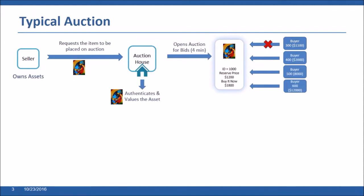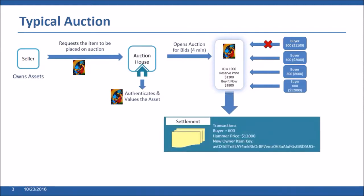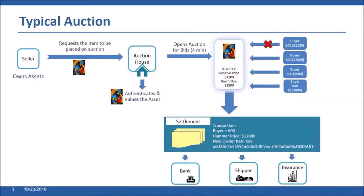Ultimately there's a timer. The highest bid becomes the hammer price for the item and a settlement process would begin. In our case it's a simple settlement process where a new owner item key is generated and provided to that new owner. But there could be more complex settlement scenarios in a future version of the application.